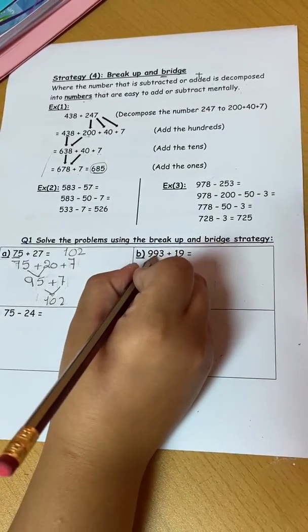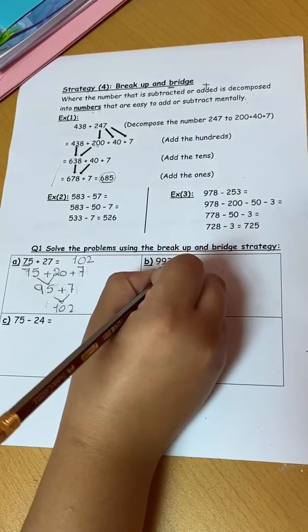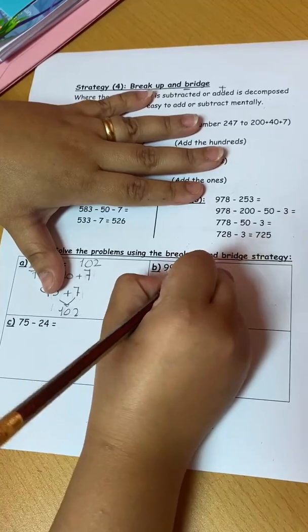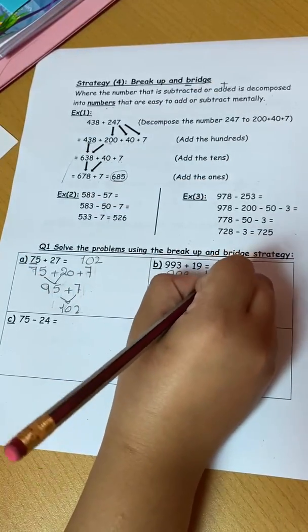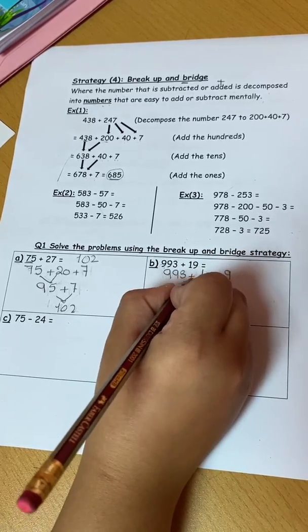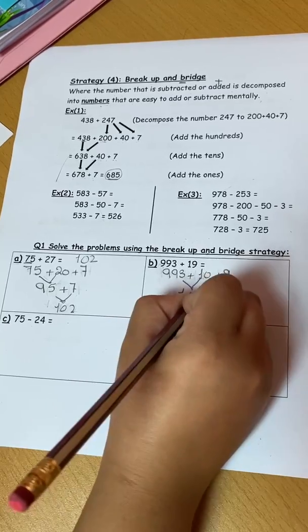Letter B I have 993 plus 19. So the greater number which is 993 plus 10 plus 9. I will add the tens together so 993 plus 10 I got 1003.